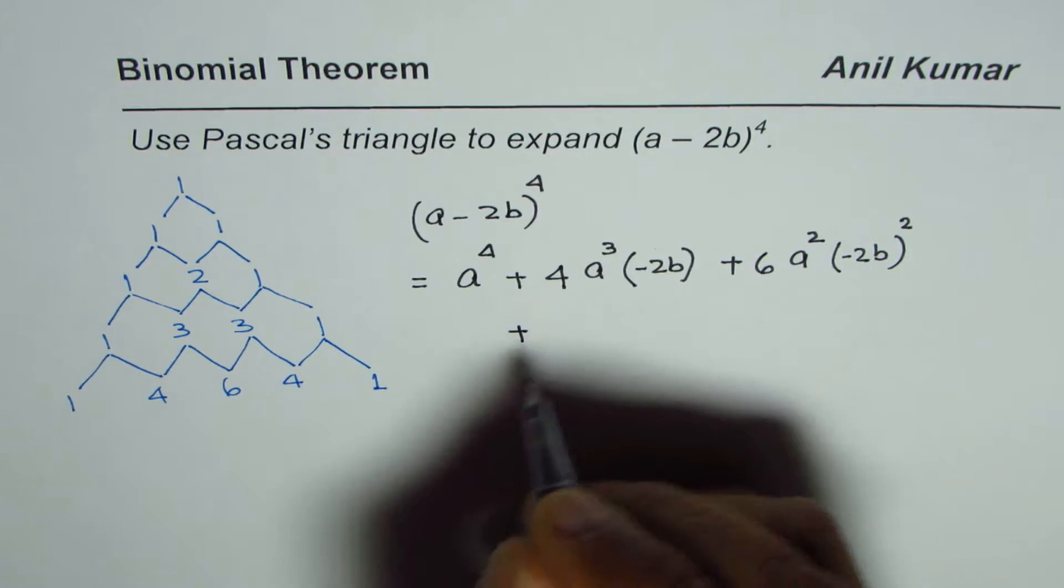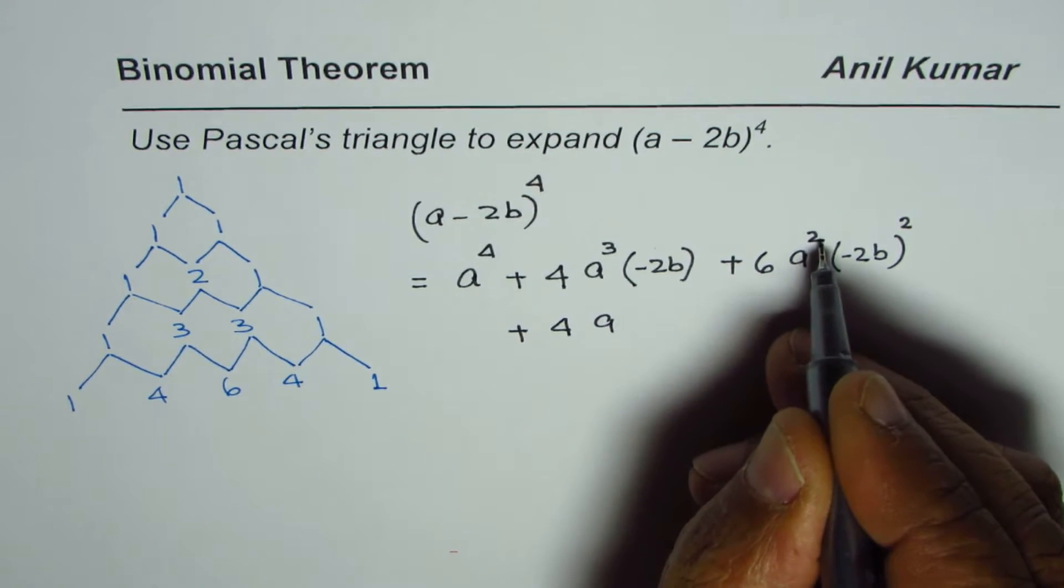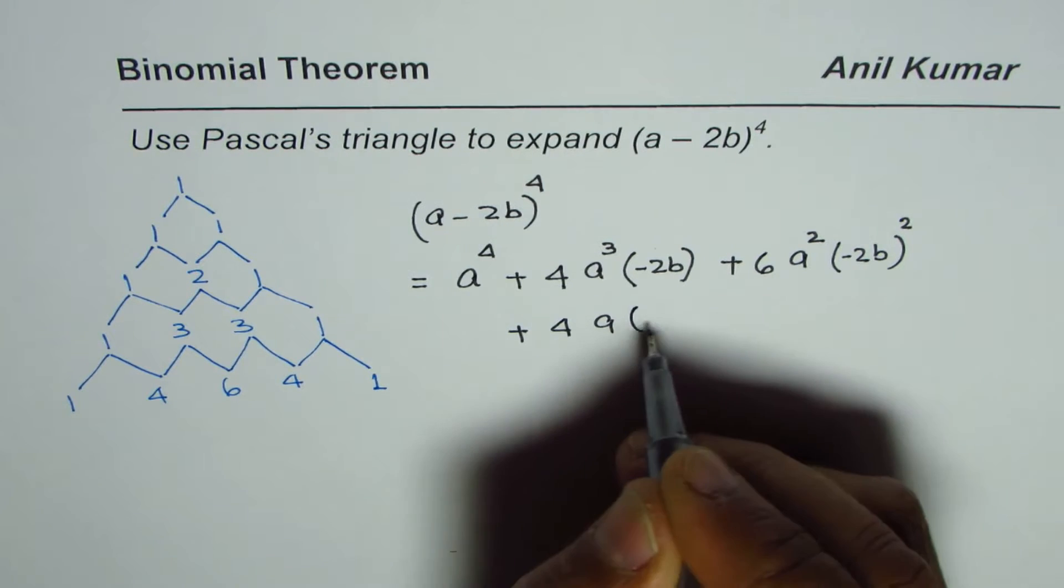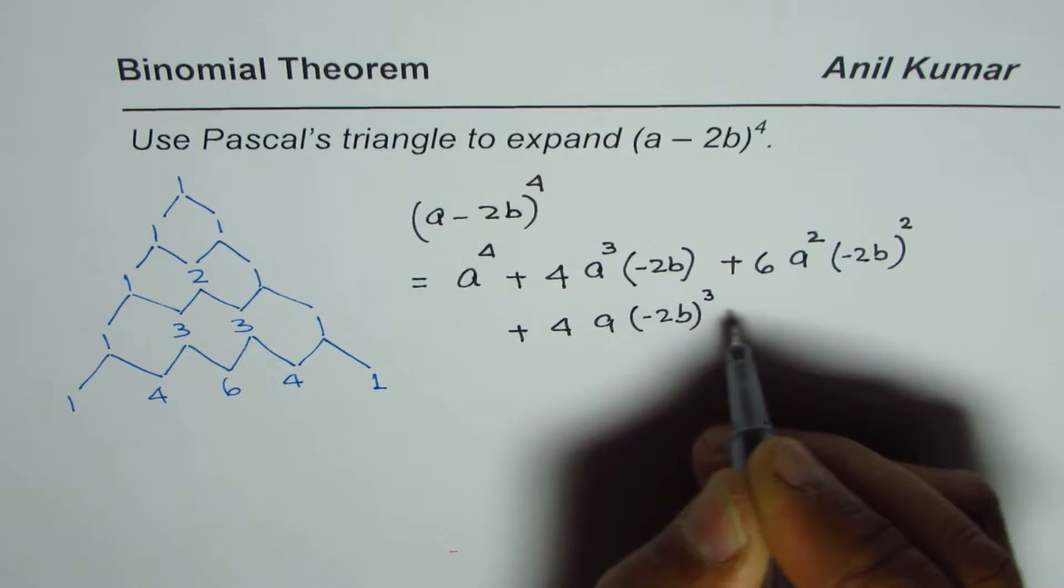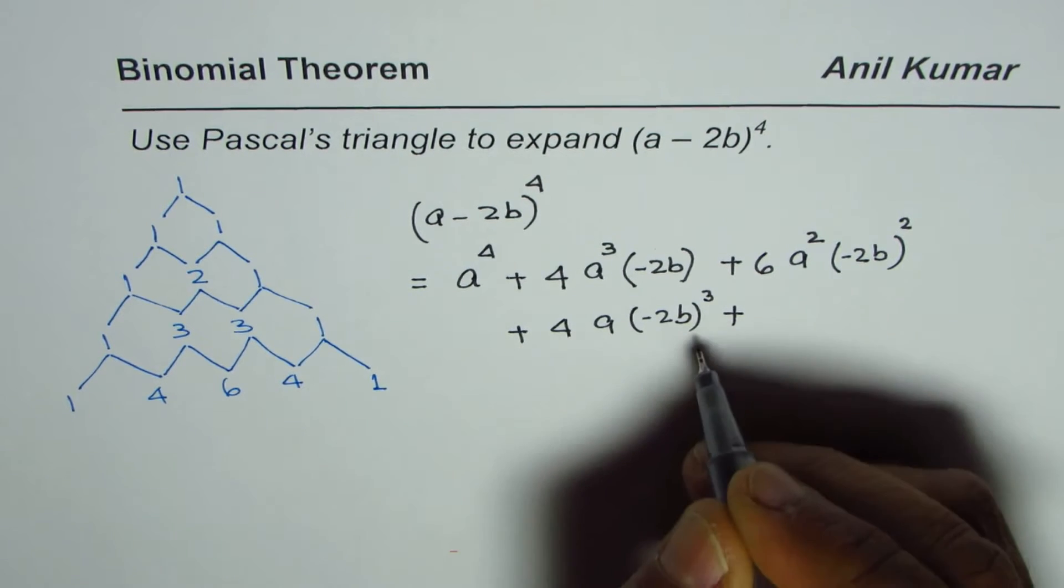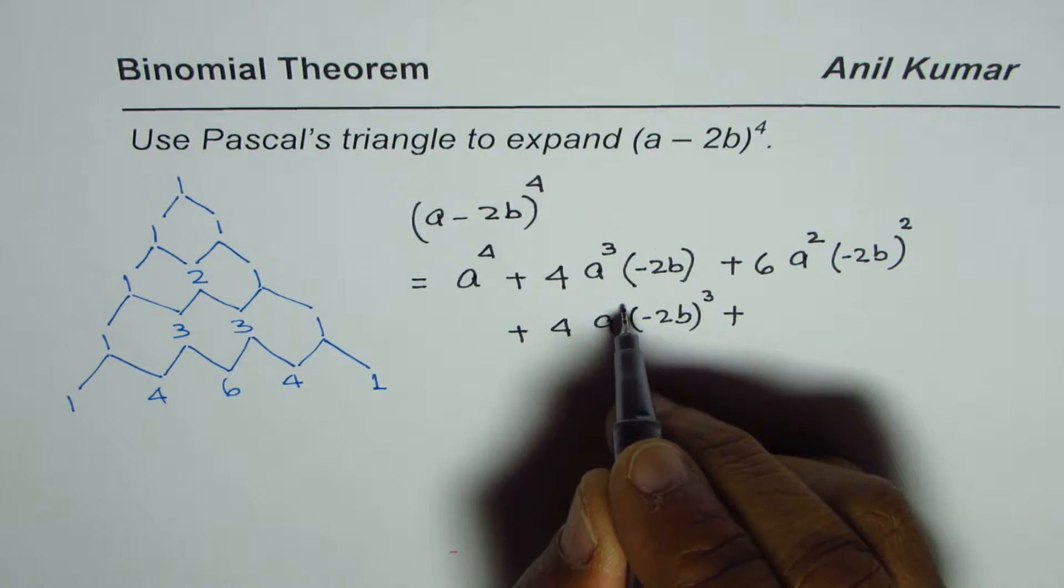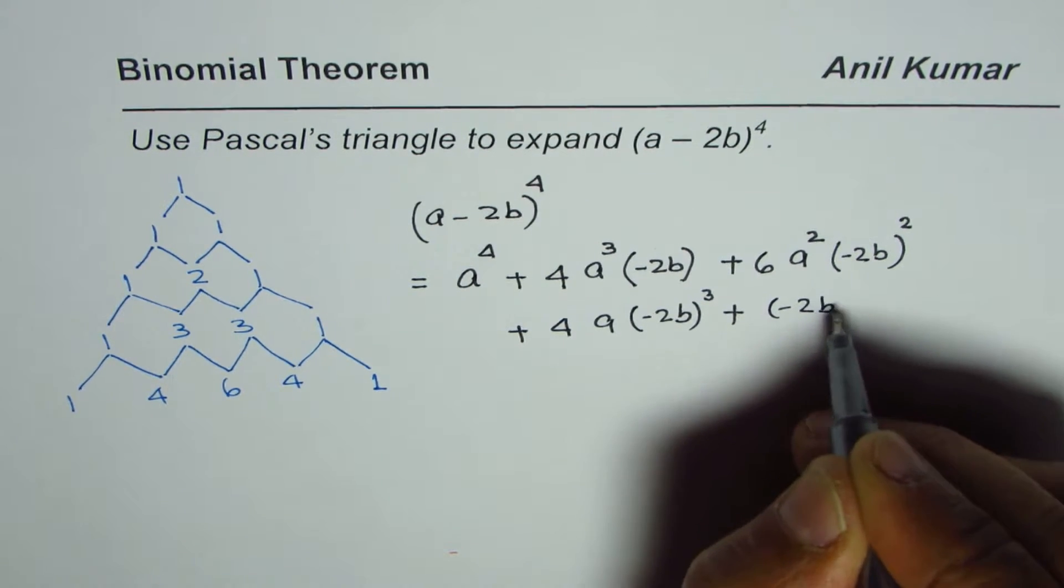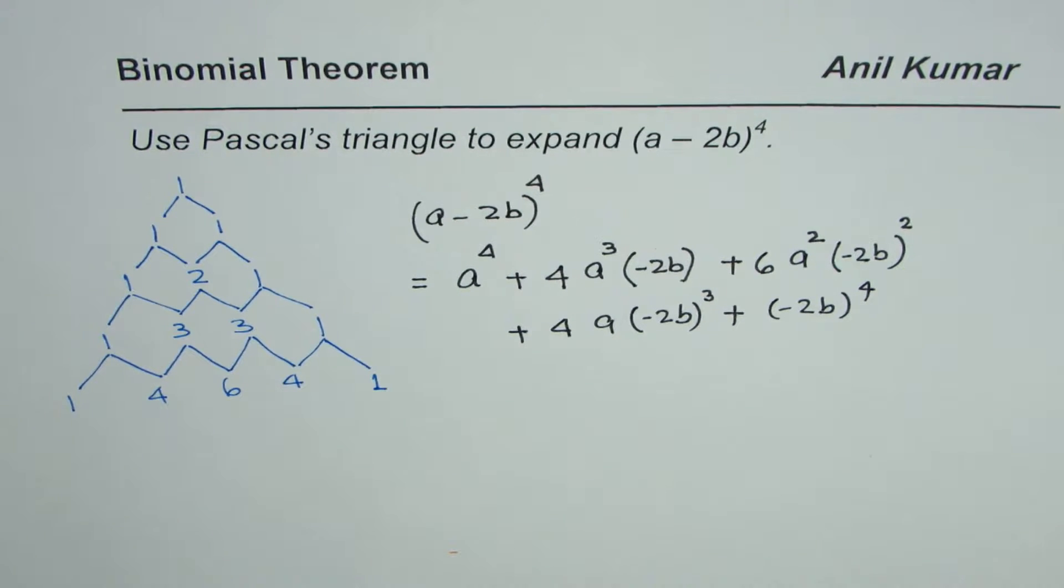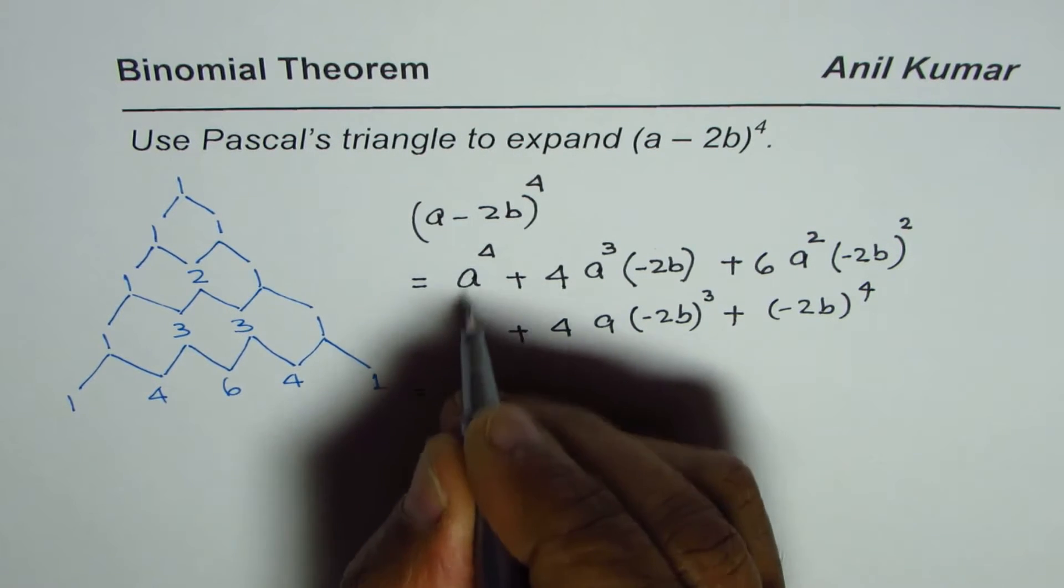a^1 and (−2b)^3. 1 plus 3 gives us 4. Then the last term where the coefficient is 1: a^0, which is 1, and (−2b)^4. That is how we expand it. Now let us simplify. We have a to the